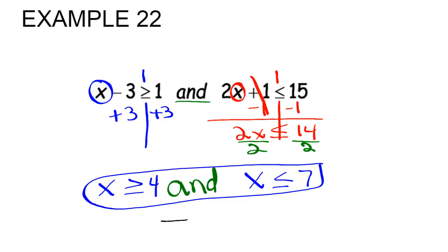If we were to graph it on the number line, we would have our 4 and we would have our 7. Both would be closed dots because both have the equal to bar.